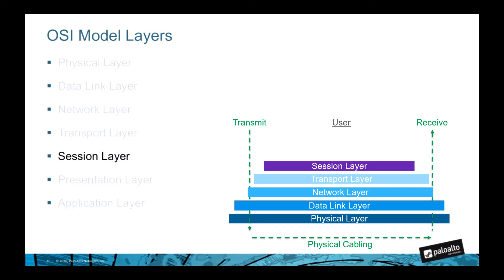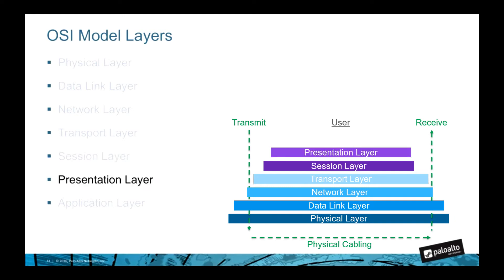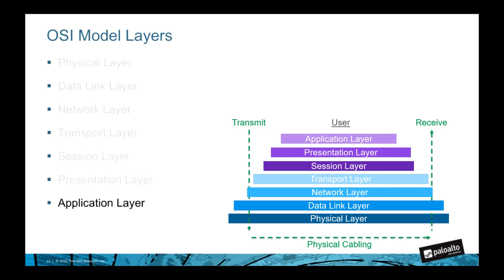The session layer, or layer five, manages the initiation and teardown of network connections and can handle multiple dynamic connections. The presentation layer, or layer six, handles two main things: syntax processing such as format conversions, and encryption and decryption for the application layer. The application layer, or layer seven, handles network services to end-user applications.